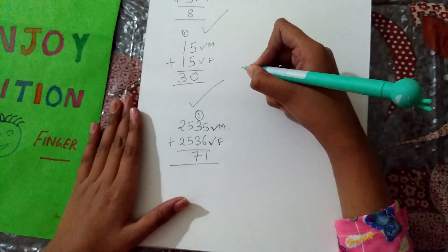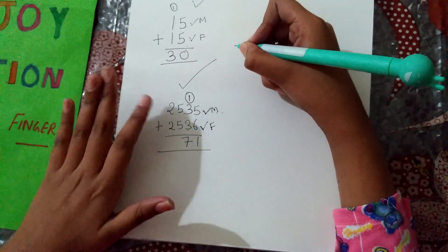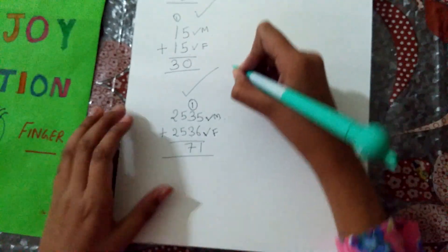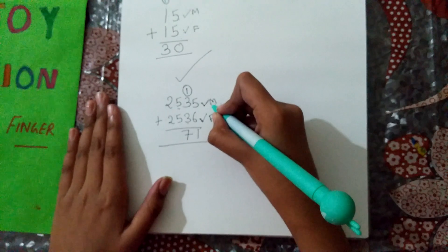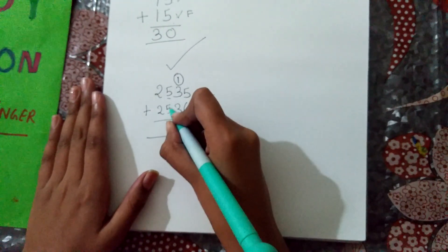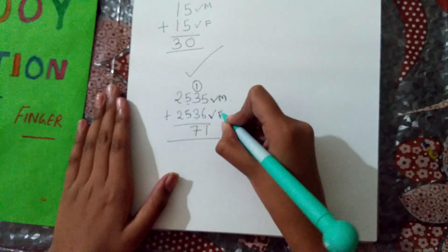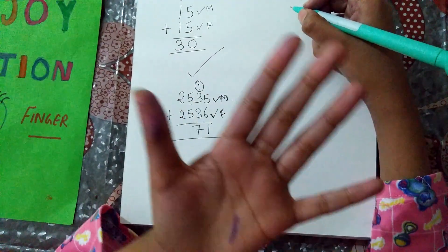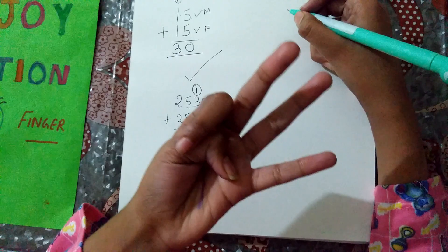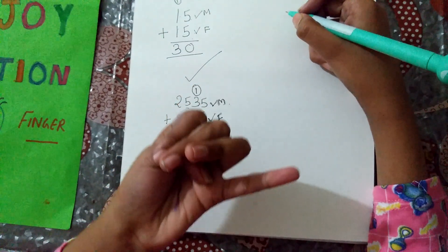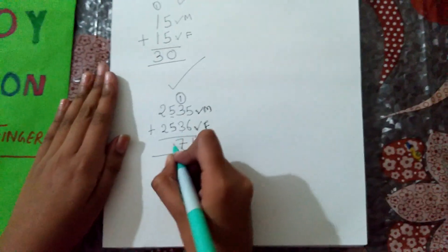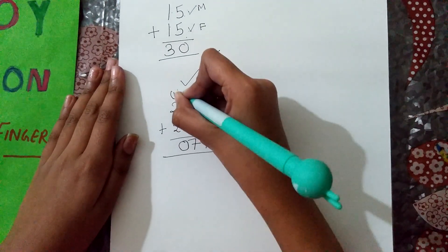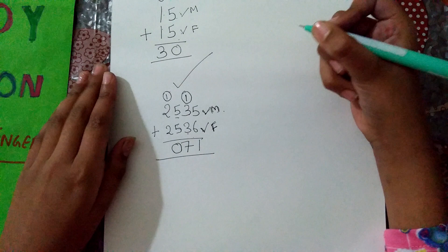Now, we will take the number is 5 plus 5. You know, 5 is in the mind and another 5 is in the finger. After 5, 6, 7, 8, 9, 10. So, right over here 0 and right over here 1.